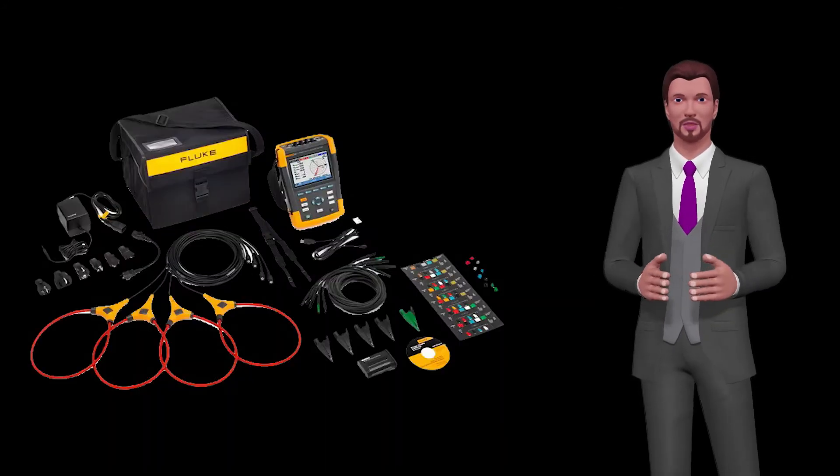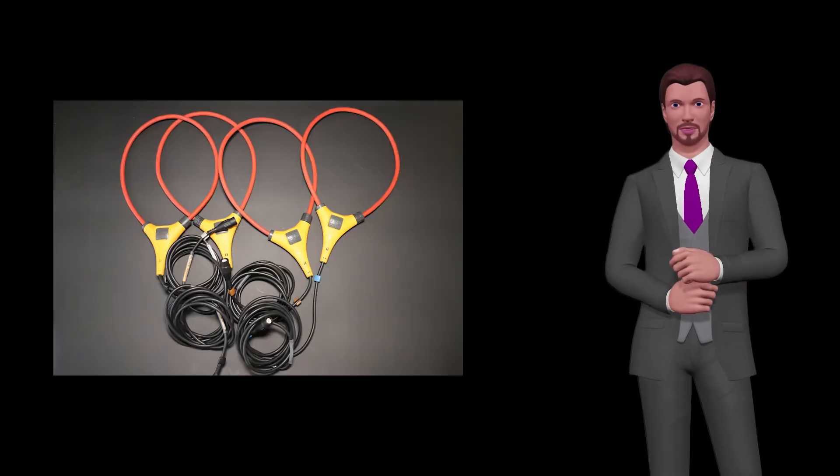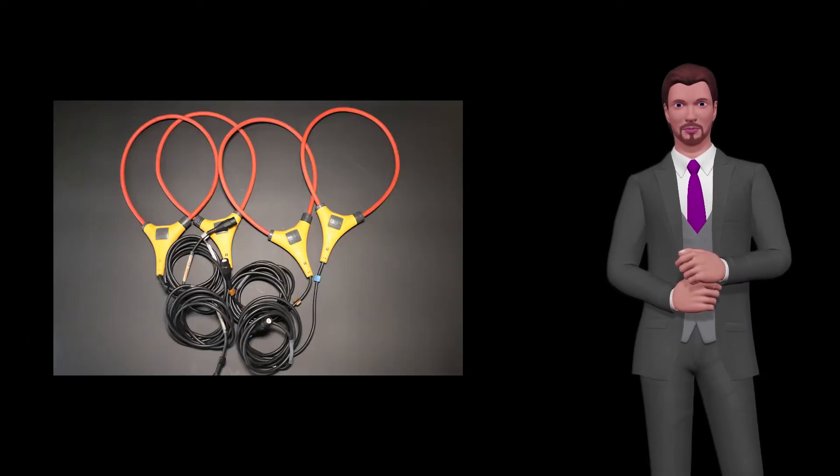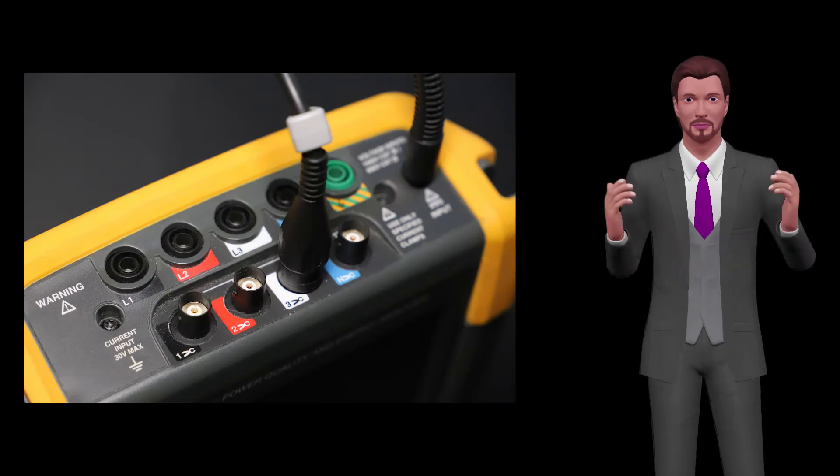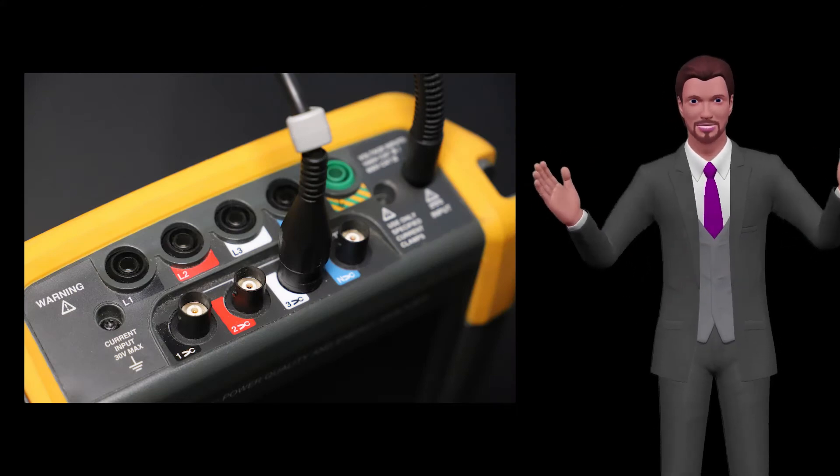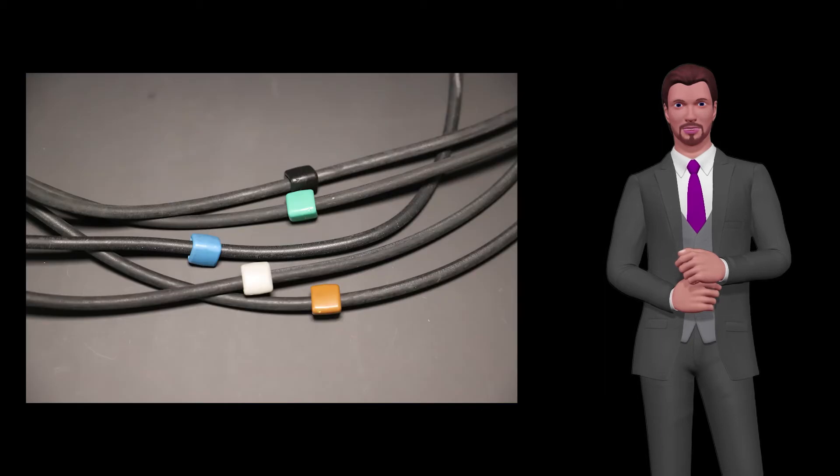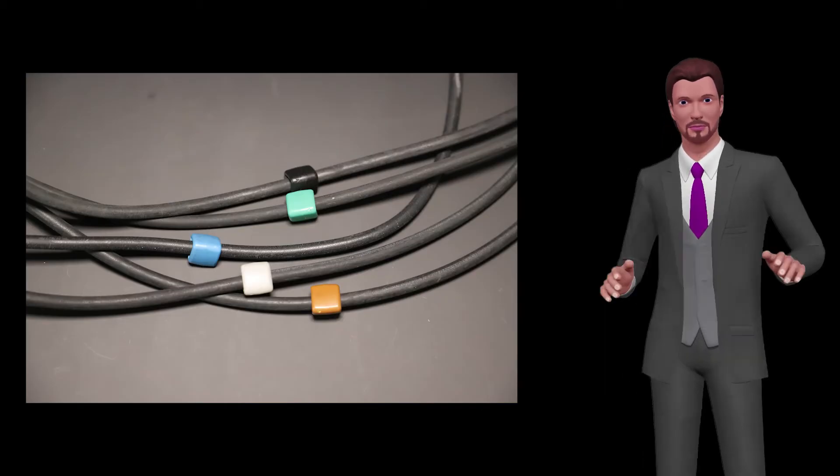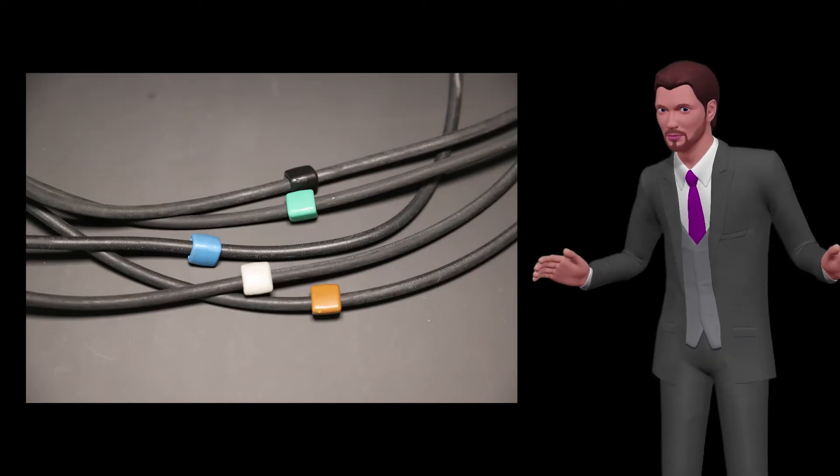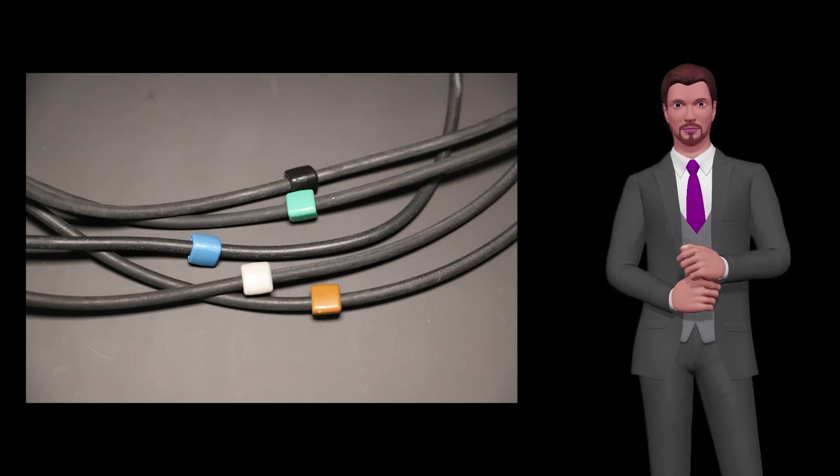Check that you have all the elements and that they are in good condition. The test lead should not have any cuts or defects that could affect your safety. Check that the equipment has the sticker with the colors for the electrical connections according to your country, and make sure that the cables have colored plastic markers for easy identification. If you haven't put them in, put them in now. That will avoid confusing the cables.